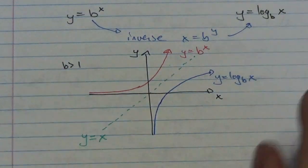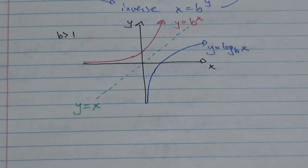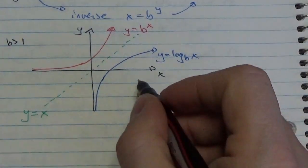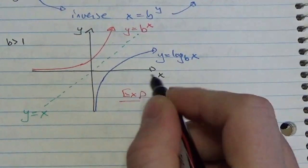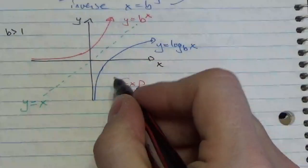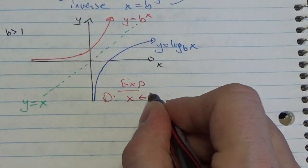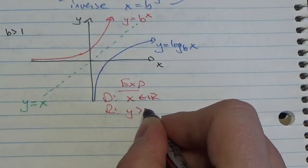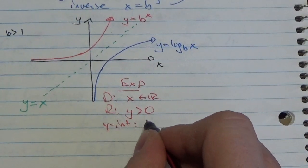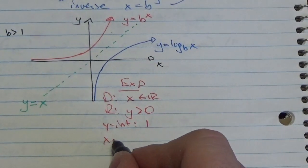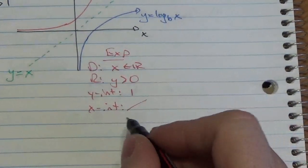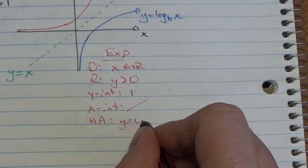With the graph in mind, let's look at some of the properties. Starting with the exponential function: its domain is x is an element of the reals, its range will be y is greater than 0, it has a y-intercept at 1, no x-intercept unless transformed, and a horizontal asymptote at y is equal to 0.